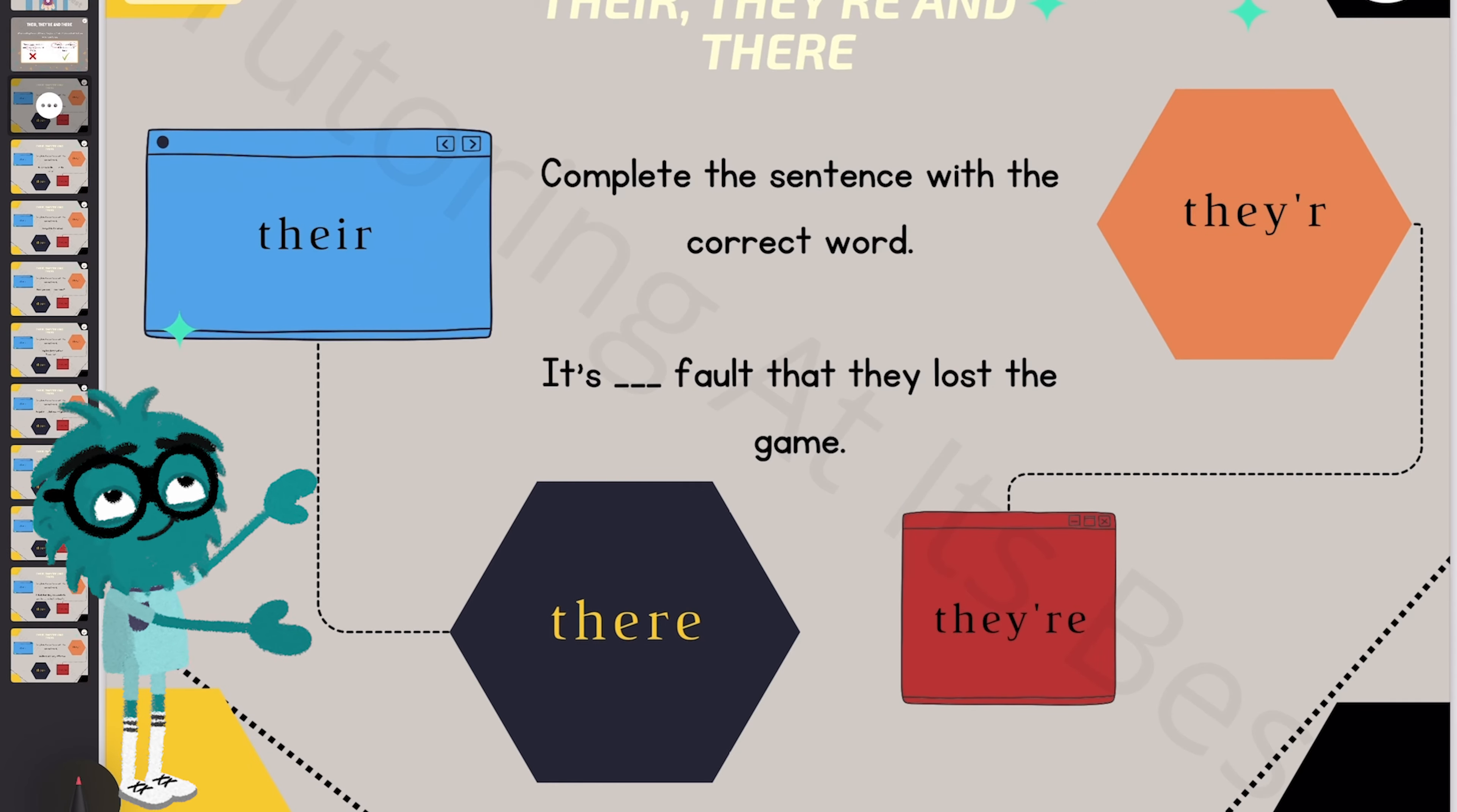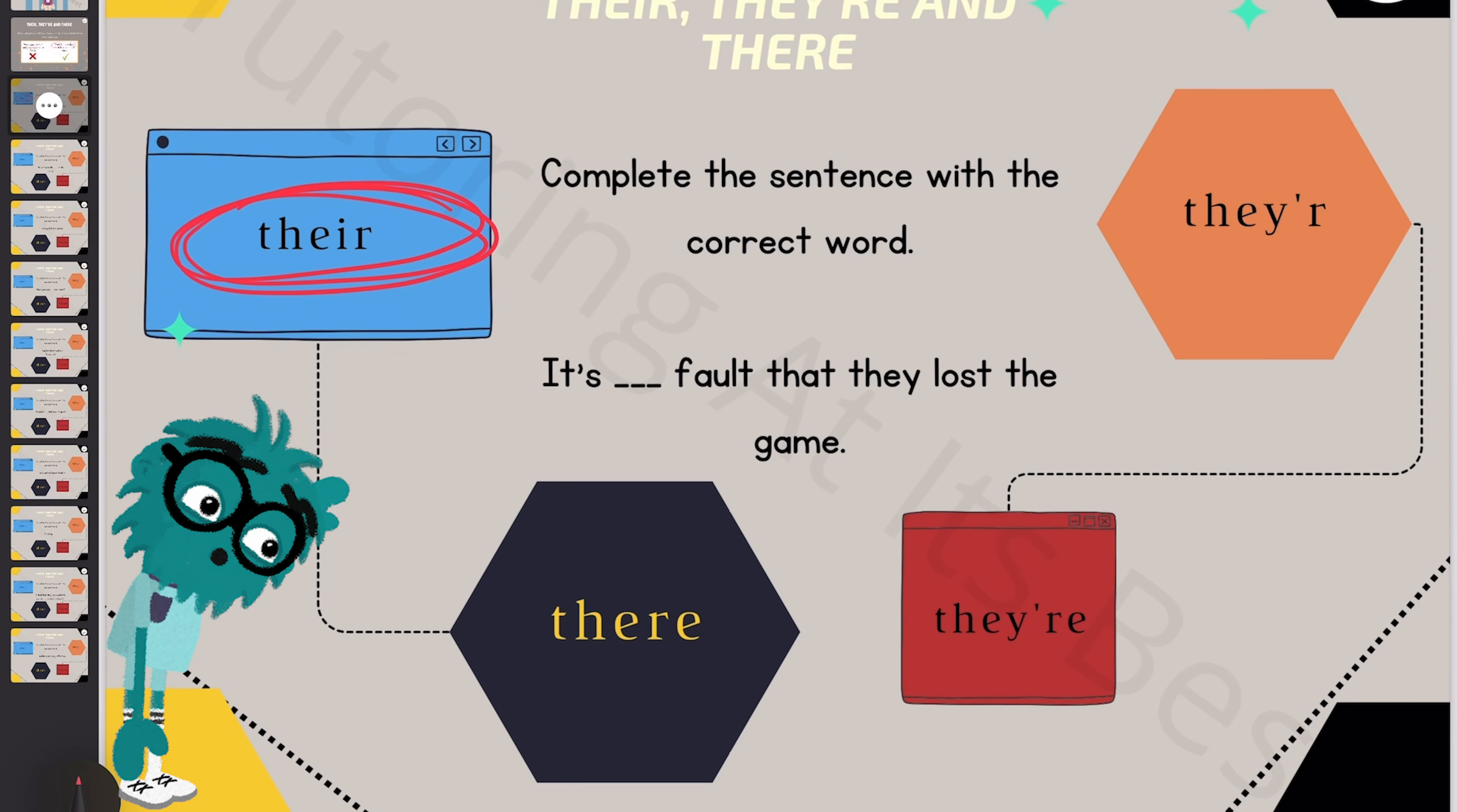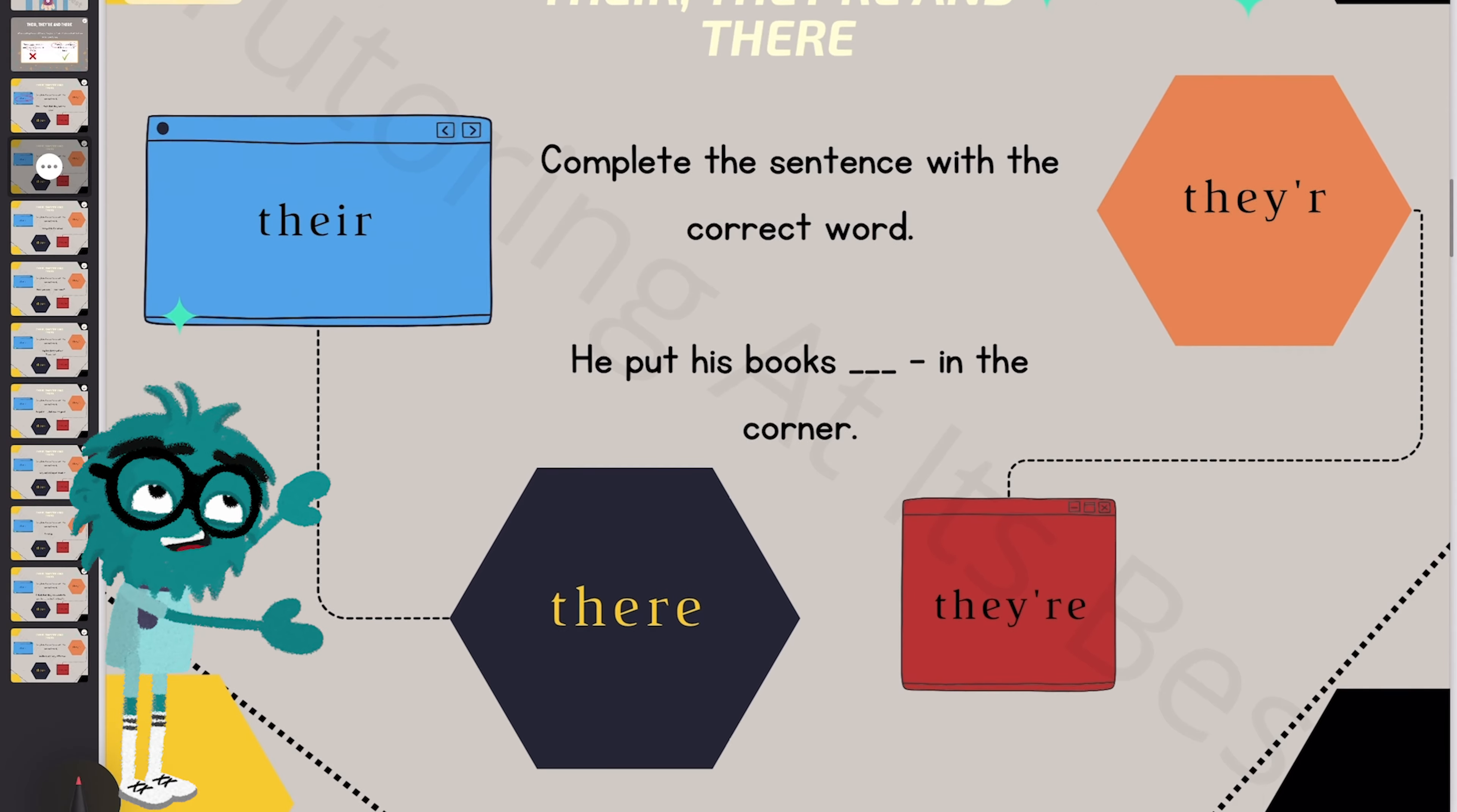It's their fault that they lost the game. Well, if it's their fault, then that's a possessive adjective, because it's someone's fault and the fault belongs to someone. So we will go for their, spelled T-H-E-I-R. So remember, it belongs to someone. The fault belongs to someone.